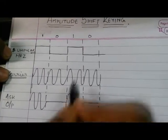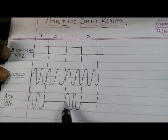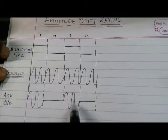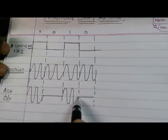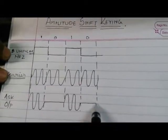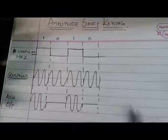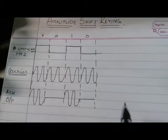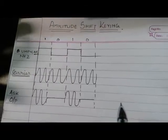Again, for logic 1 we get the carrier as it is at the output, and for logic 0 the output is 0. So this is the basic concept of Amplitude Shift Keying.